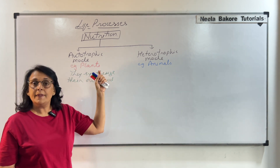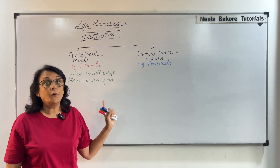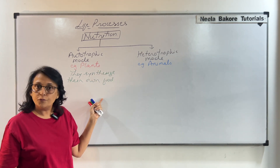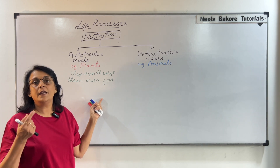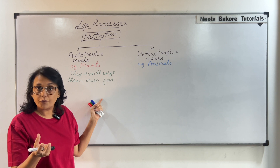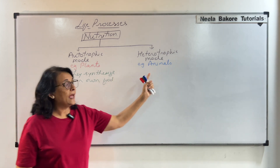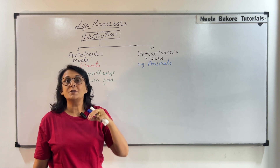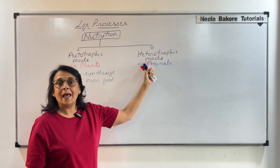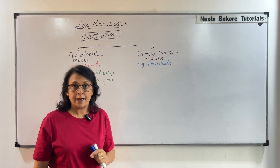Plants synthesize their own food by the process of photosynthesis, using sunlight, water, carbon dioxide, and chlorophyll — so they become autotrophs. Animals, on the other hand, take nourishment from some other plant or animal, making them heterotrophs, and their mode of nutrition is called heterotrophic.